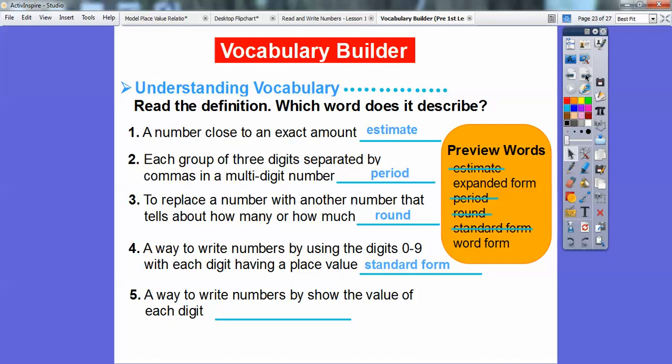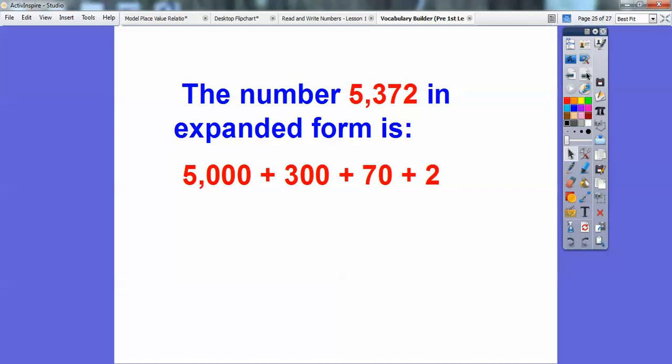And then a way to write numbers by showing the value of each digit. So that would be the expanded form, and I'll show you an example here. This number, I'm going to put this in expanded form: 5,372. This 5,000 is represented here. This 300 is represented here. This 70 is represented here, and then this 2 is represented here. So this 5,372, here it is in an expanded form. Get used to that. We're going to be doing that a lot in this chapter. This is a way to write numbers by showing the value of each digit in expanded form.